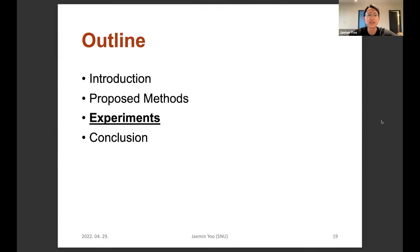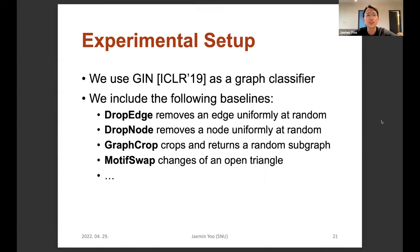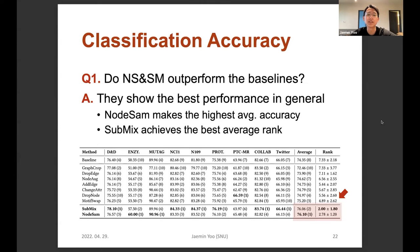Now let me introduce our experimental results. We use nine datasets for graph classification: seven are small molecular graphs and two are large social networks, each dataset consisting of 300 to 100,000 graphs. We use GIN, proposed at ICLR 2019, as a graph classifier because it works well in various settings and domains. We include various algorithms as baselines for model-agnostic graph augmentation, including drop edge, drop node, graph crop, and motif swap. For example, drop node removes a node uniformly at random from the given graph, and motif swap changes an open triangle in the graph.